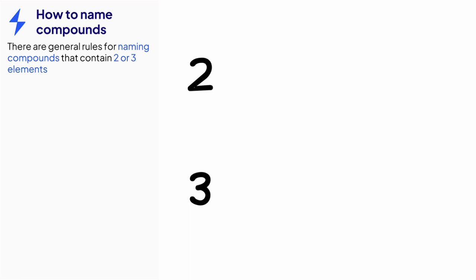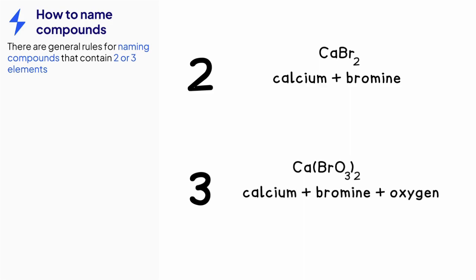We will use CaBr2 and Ca(BrO3)2 as our examples. CaBr2 contains calcium and bromine, while Ca(BrO3)2 contains calcium, bromine and oxygen. When naming compounds, the metal typically comes first in the name. This means that both chemical names start with calcium.